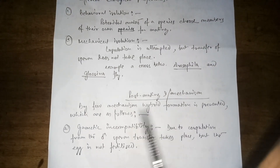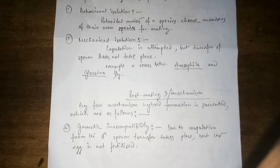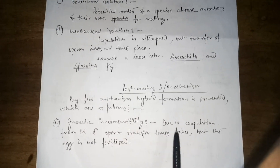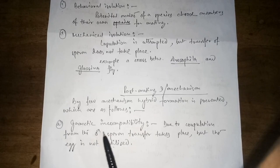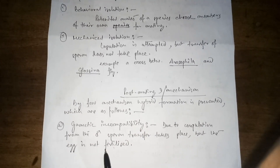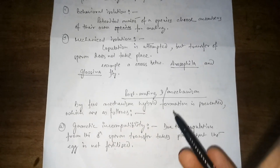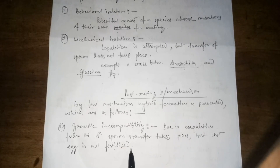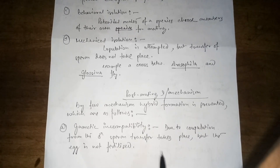Moving on to post-mating mechanisms — hybrid formation is prevented by a few mechanisms. Firstly, gametic incompatibility: copulation takes place and sperm transfer occurs, but the egg is not fertilized in the process.